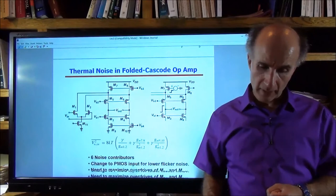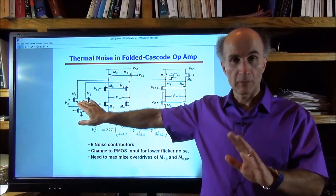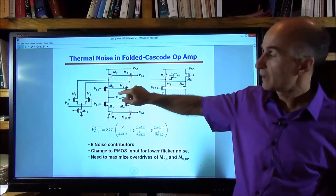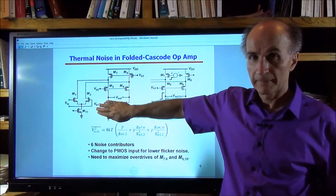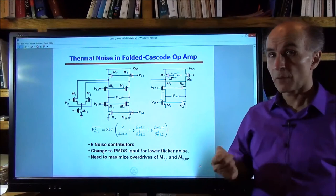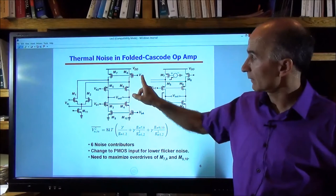Now let's look at the noise in a folded cascode op-amp. We have our differential pair with gate-referred noise voltages 4KTγ/GM — two of those. M5 and M6 are cascodes, so they contribute negligibly. M3 and M4 are cascodes, so they also contribute negligibly. But M9, M10, M7, and M8 are constant current sources, so they contribute noise. To analyze the role of M7, I place a voltage source in series with its gate to AC ground, representing its gate-referred noise, and ask whether this produces significant noise at the output.